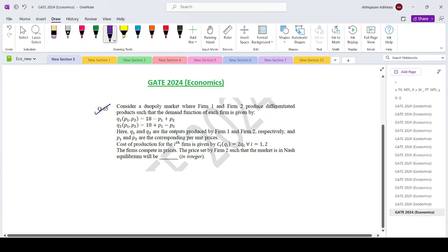Consider a duopoly market where firm 1 and firm 2 produce differentiated products such that the demand function for each firm is given in this manner. Q1 and Q2 are the output produced by firm 1 and 2 respectively, and P1 and P2 are the prices of the corresponding units.